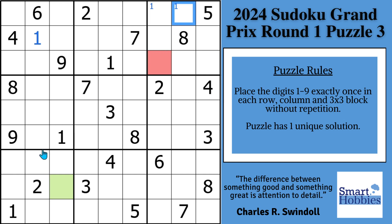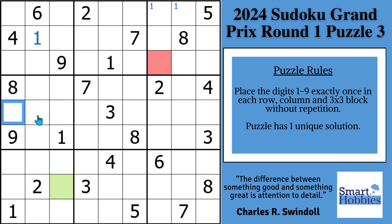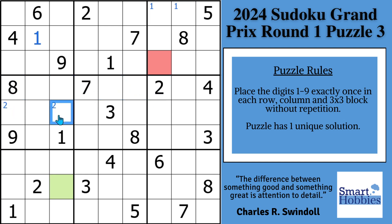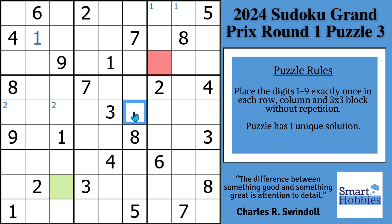Now let's look at the 2s. You'll notice you have this 2 cutting across row 4, and you have this 2 coming up column 2. So there's only two possibilities for a 2 in block 4. However, these 2s are a little bit different — they're called a pointing pair. You notice how the 2 cuts across row 4, and you have the 2s in the same row, row 5, restricted here in block 4. That means a 2 can't be anywhere else along row 5. It already can't be here because of this 2, and it can't be here because of this 2. But now it can't be here anymore — that's called a pointing pair. Because if you put a 2 right here, you have no place to put a 2 in block 4.